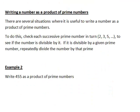Let's look at a second example: writing 455 as a product of prime numbers. 455 is an odd number, so it is not divisible by 2.